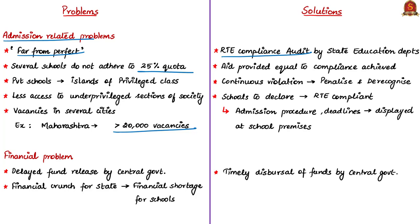As solutions, the authors say to conduct an RTE compliance audit for all schools every year by the state education department, compelling schools to fill up vacancies. When a state government extends aid to a private school, the aid should be proportionate to the levels of compliance achieved. The authors also suggest that continuous violations by schools should lead to penalties and de-recognition. Every school should also declare its compliance with RTE rules and regulations, including admission procedures and deadlines, visibly displayed at the school premises and online.